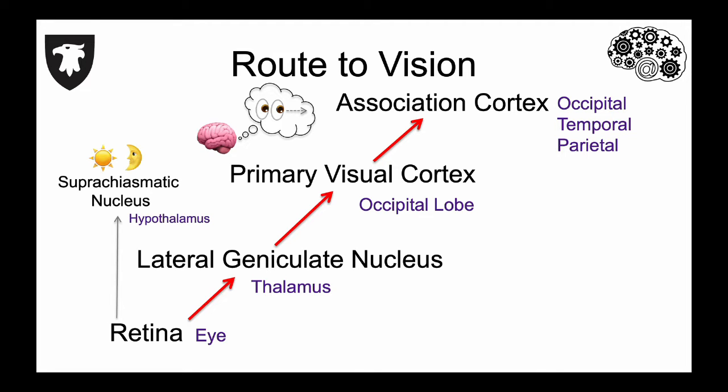There's another smaller projection from the retina to the hypothalamus to a structure called the suprachiasmatic nucleus, or SCN, which is responsible for controlling daily rhythms.